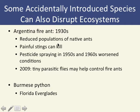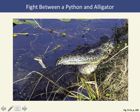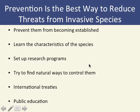Other accidentally introduced species include the fire ant, introduced in the 1930s, and the Burmese python in the Florida Everglades. The biggest strategy for dealing with invasive species is prevention — stopping them from becoming established in the first place is far better than managing them afterward, just as preventing pollution is better than cleaning it up.